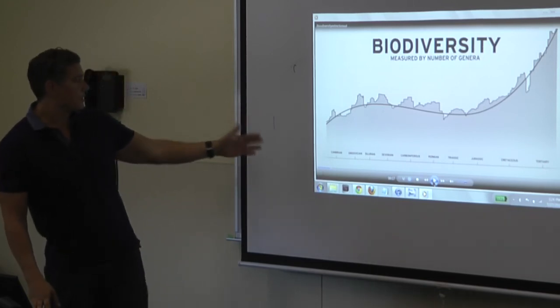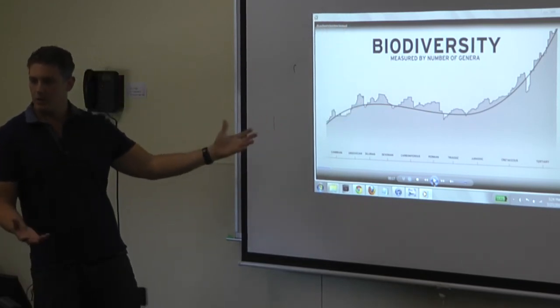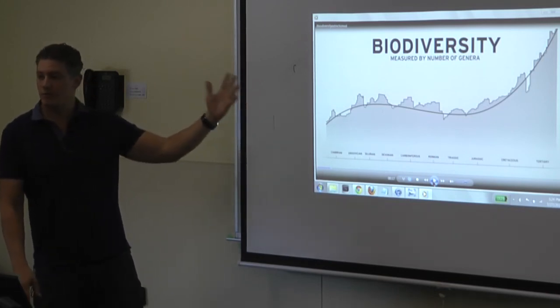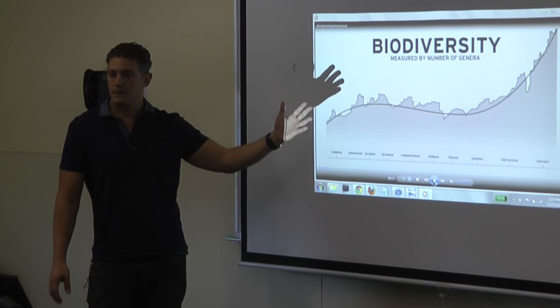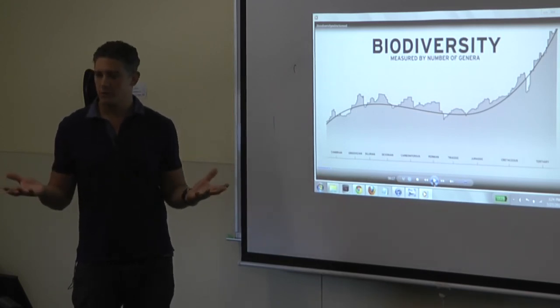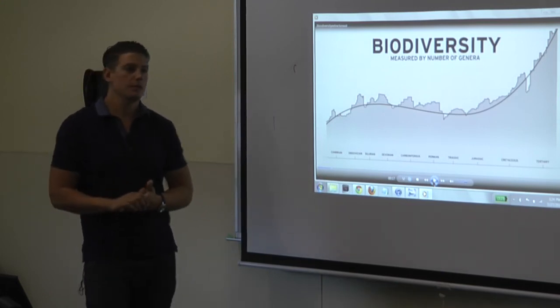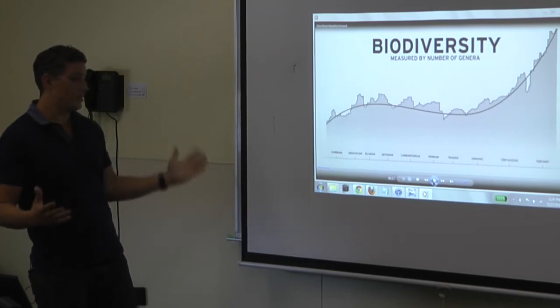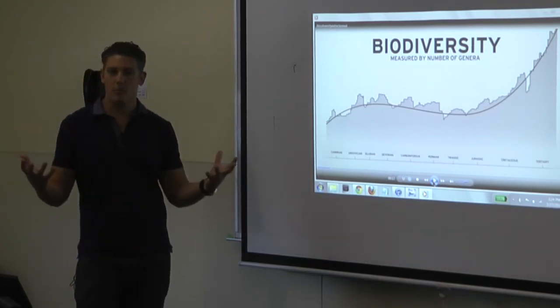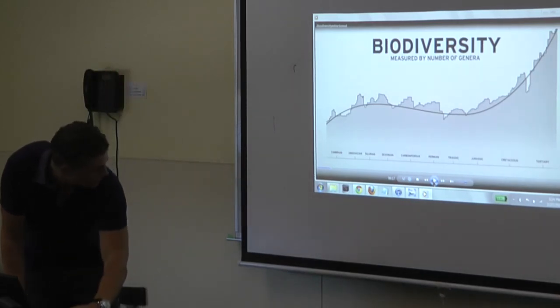Now the one thing to notice is that it is jagged, it goes up and down, but the overall trend throughout the history of life on the planet has been towards an overall increase of biodiversity. Meaning different types of creatures. So the overall trend has been an increase in biodiversity. Life is becoming more complex, more robust on the planet.